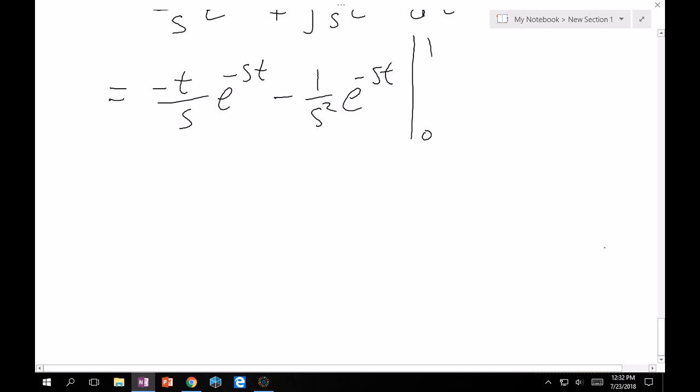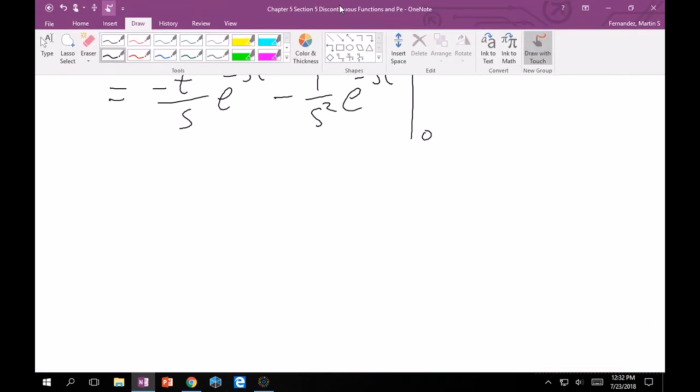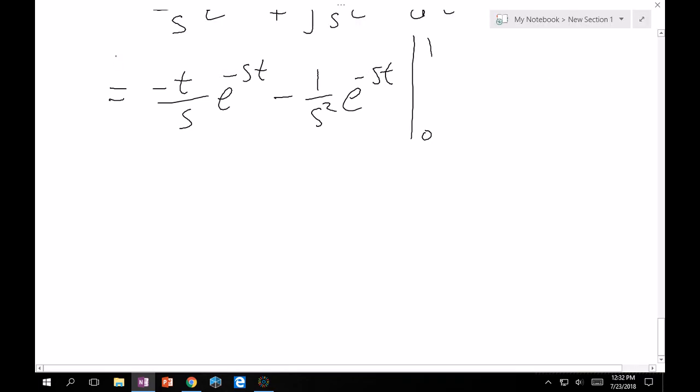What happens now is you just plug in zero and one. And so, you end up getting, when you evaluate at one, right? And remember, this is that you evaluate t, not s. So, it's minus one over s e to the minus s. Minus one over s squared e to the minus s. Good. And then you do minus. Evaluating at zero, that's going to be zero for the first one. And then over here, it's going to give you a minus one over s squared.